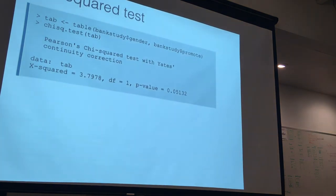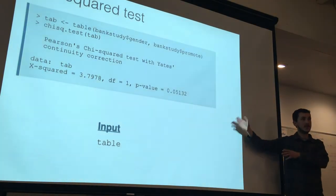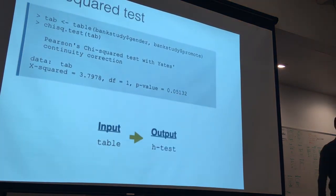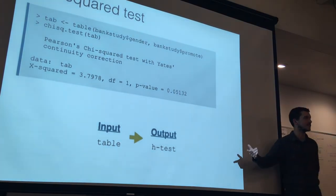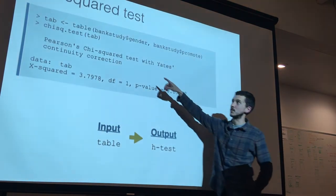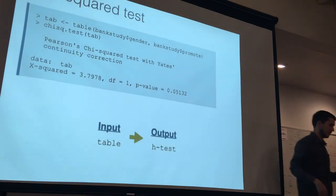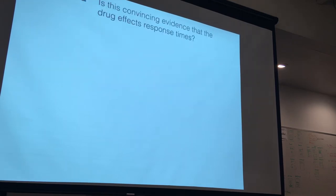The 0.05 threshold is often used, but we can see we're sitting right on top of it. Worth noting: running chisq.test with a contingency table returns an object of class htest — which I didn't even know existed until putting these slides together. Keep that in mind as we move on to the second question.